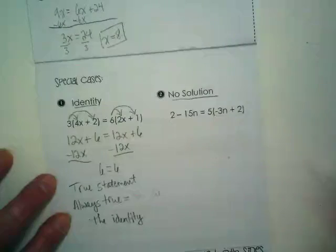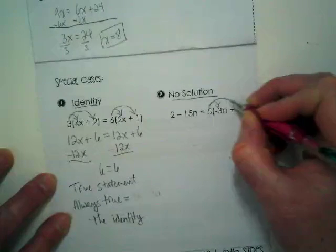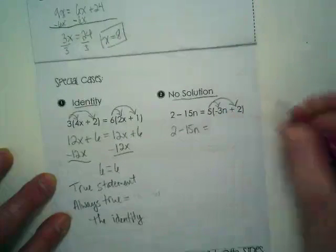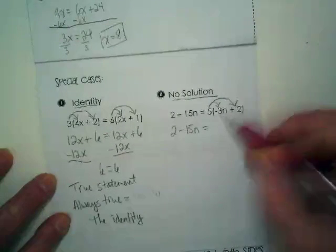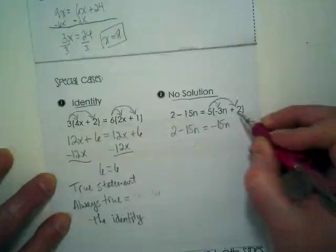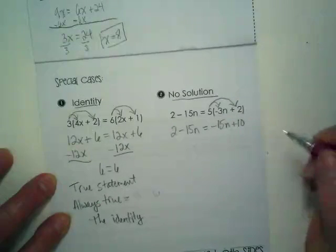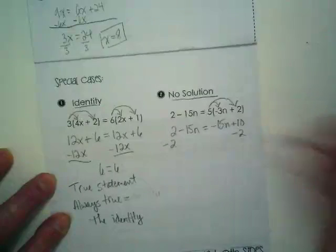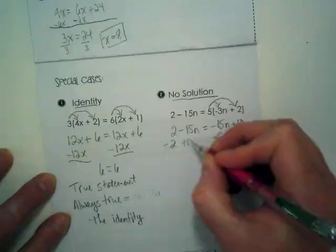Now let's talk about no solution. First thing we want to do is always just try to solve the problem. I'm going to write the left side just as it is. And on the right side, we have some distributive property. 5 times negative 3 is going to get us negative 15n. And 5 times positive 2 is going to get us 10. Okay? I want to combine like terms. So I'm going to move the 2 to be with the 10. And I'm going to move this 15n to be with this 15n.